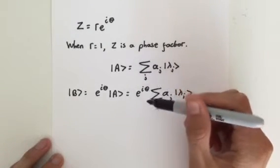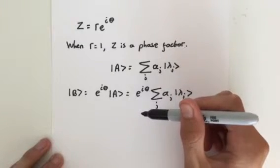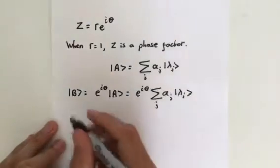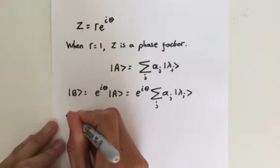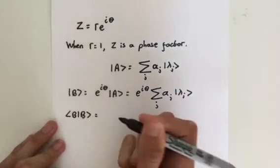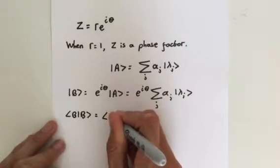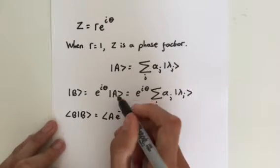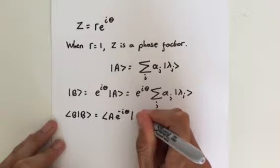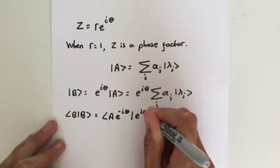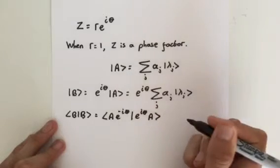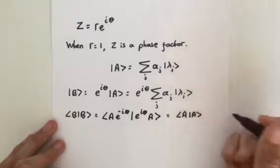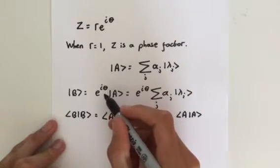It's easy to see that b has the same magnitude as a, because e to the i theta has a magnitude of 1. When we do the inner product, we can say b with b is going to equal a times e to the minus i theta, because there's a bar so a complex conjugate, with the inner product of e to the i theta times a, which is just going to equal a with a, because e to the i theta has a magnitude of 1. That's really important.